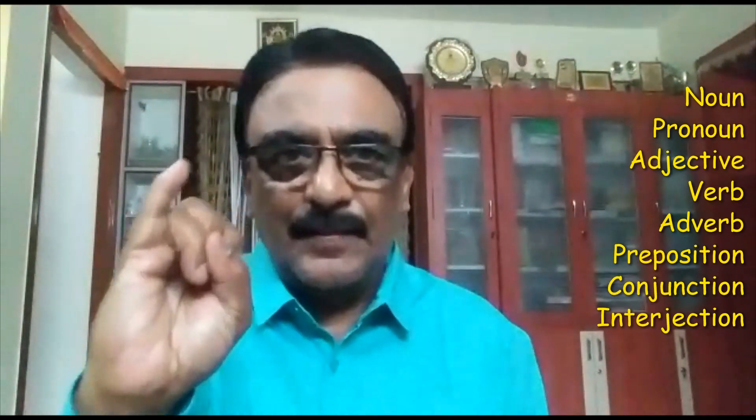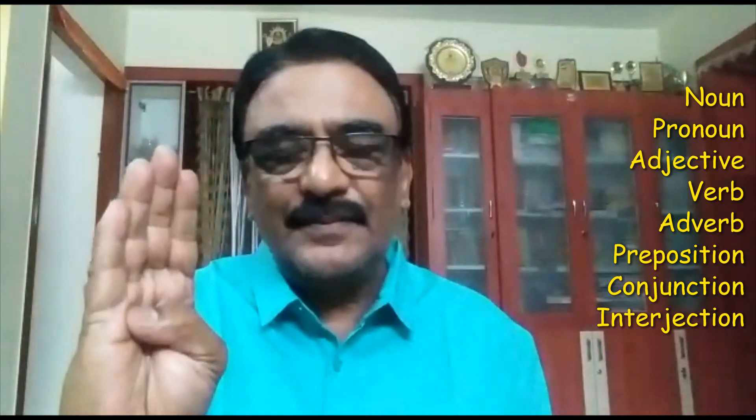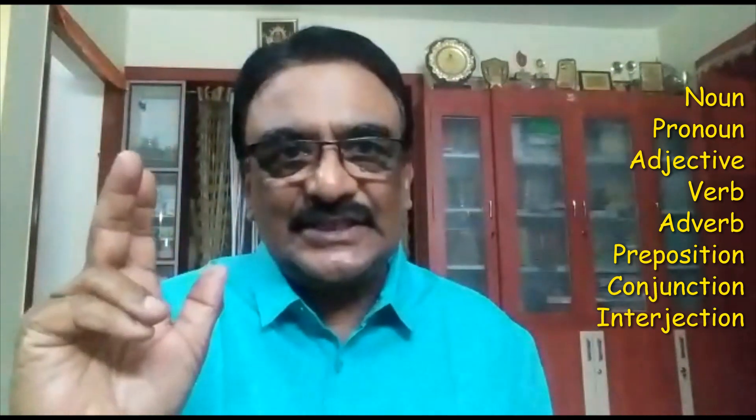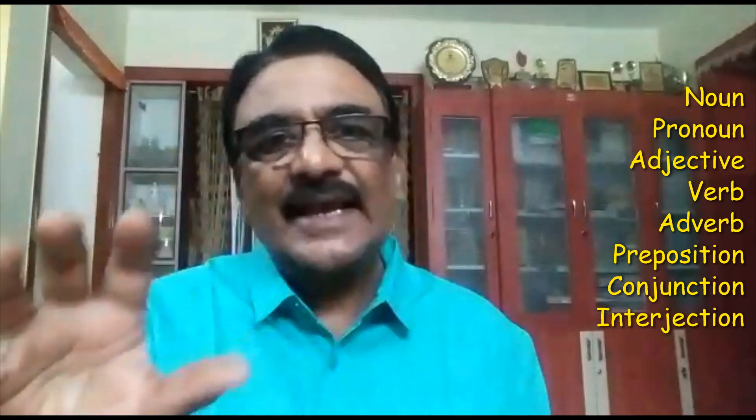Now do you want to know the names of those houses? You can note them down. The first one is noun, pronoun, adjective, verb, adverb, preposition, conjunction, and interjection. These are the eight houses, and these houses form a colony. That particular colony is called parts of speech. So parts of speech has eight houses from where all the words come, and each word has a house. Depending on the work that the word is doing in a sentence, it goes to a particular house. Parts of speech is the main thing in English.